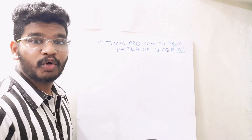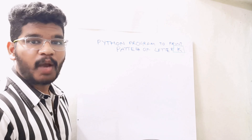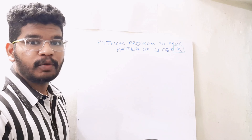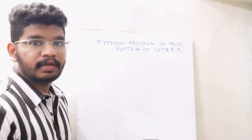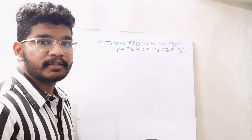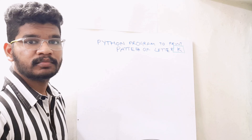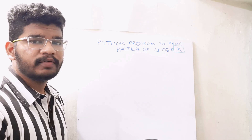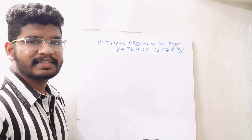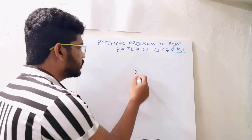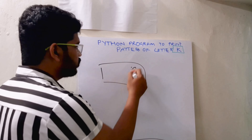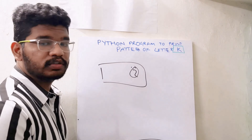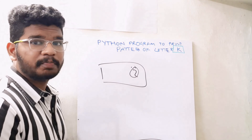Hello everyone, welcome to programming in python.com. In this video I am going to tell you how to print the pattern of letter K. In the previous videos I told you how to print the patterns of letter J. I will also link all the previous videos playlist in the description and in the eye button in the right corner of this video. Click that eye button for all the previous pattern videos. Now let's get started with the pattern of letter K.